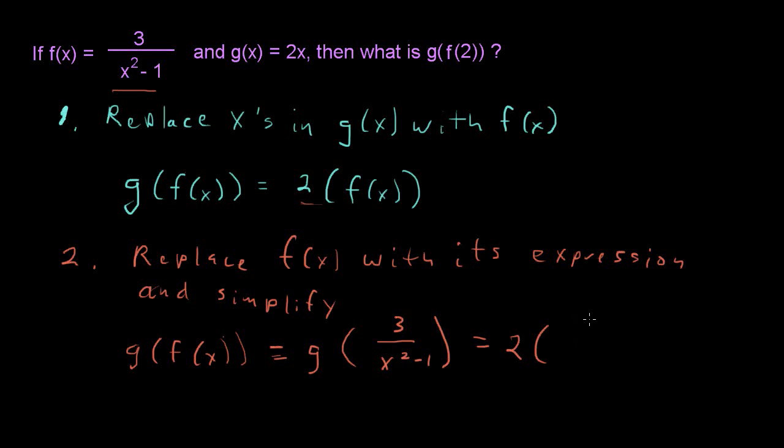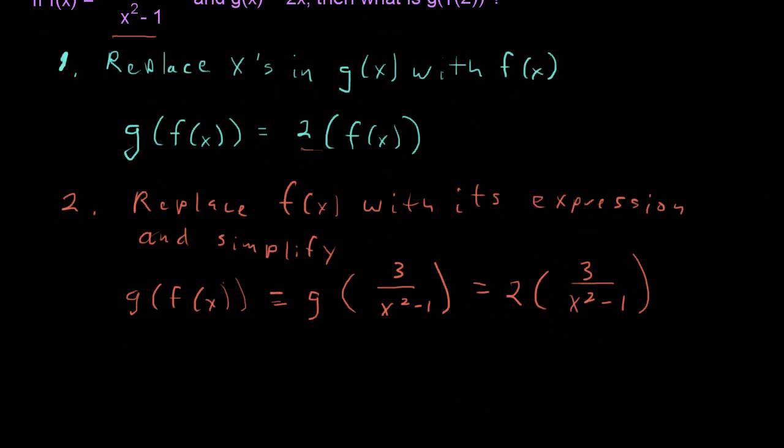We'll have 2 and replace 2 times and replace the f(x) with 3 over x squared minus 1. So we've completed the replacement and now we'll do the simplifying. And we don't want to do too much simplifying here. We just want to multiply 2 times 3 and so we get 6 over x squared minus 1.